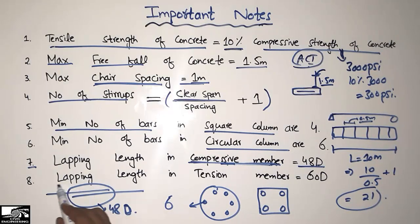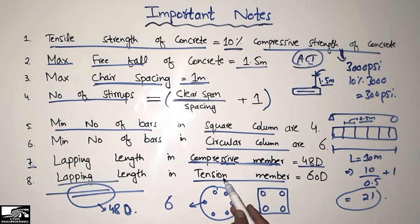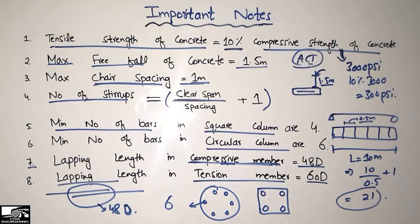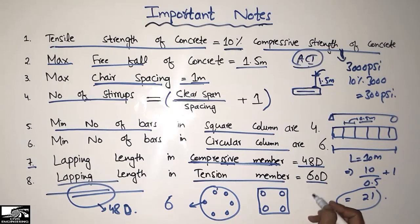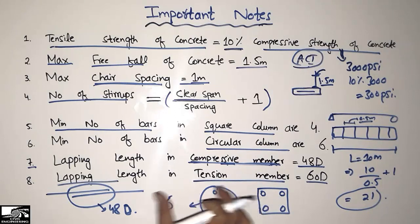For the lapping length in tension members, such as slabs and beams, you can use the formula: lapping length = 60d, where d is the diameter of the bar. Multiplying the bar diameter by 60 gives you the lapping length for tension reinforcement in slabs and beams.